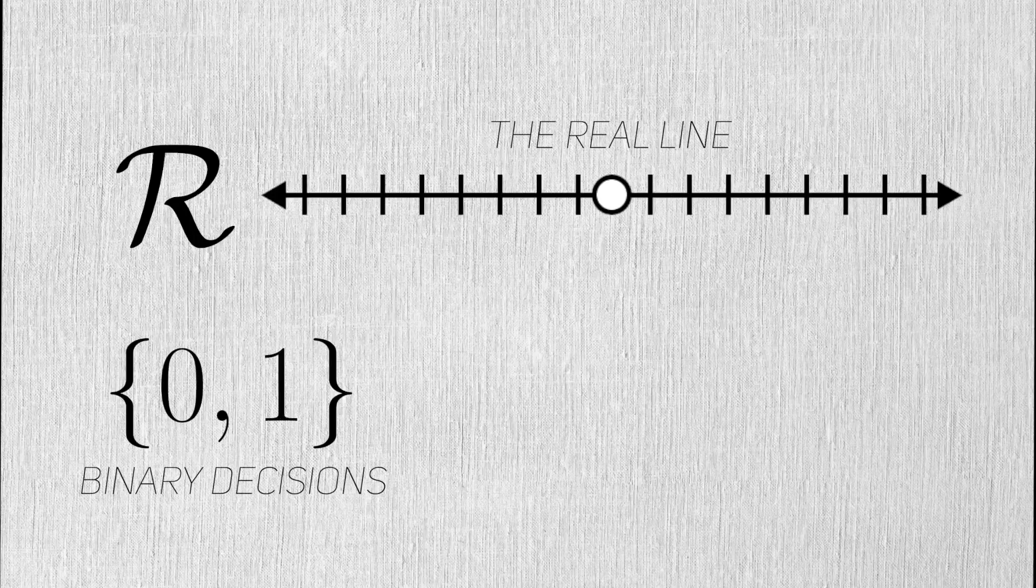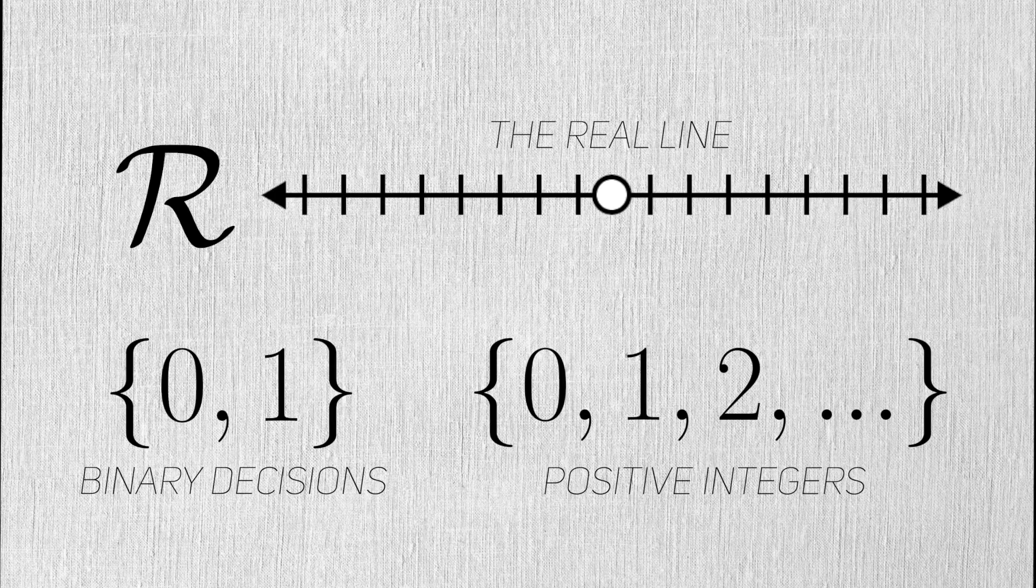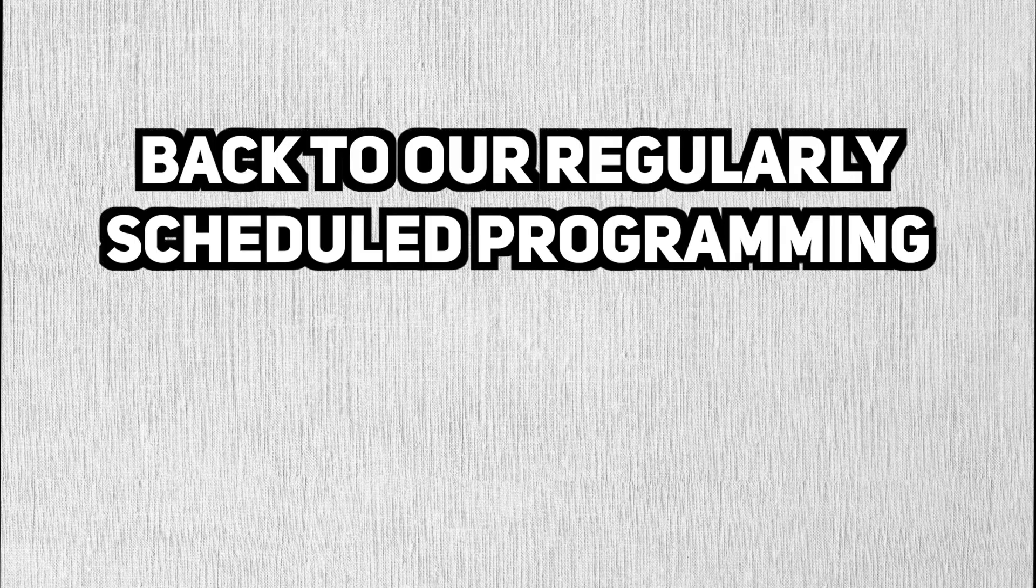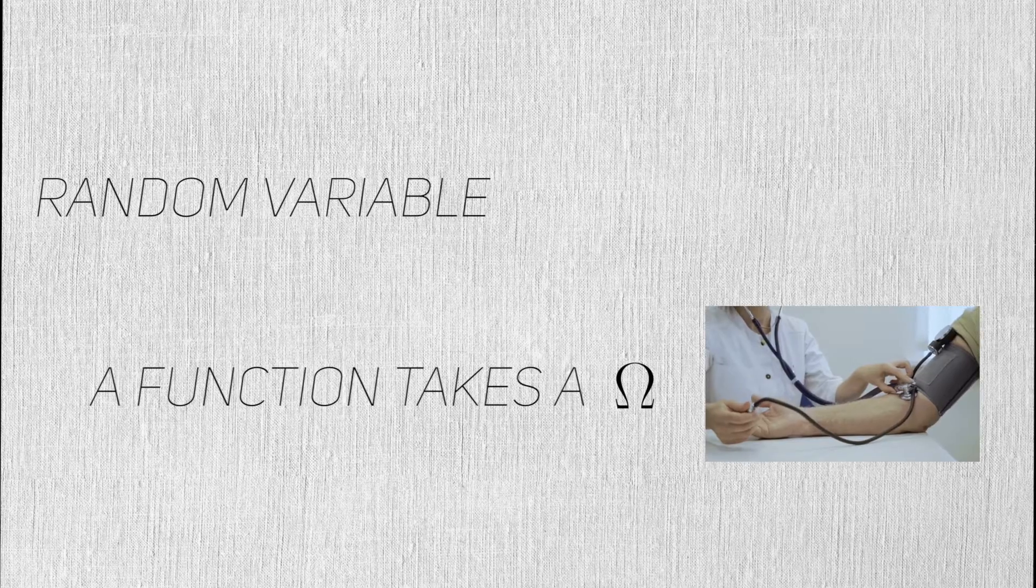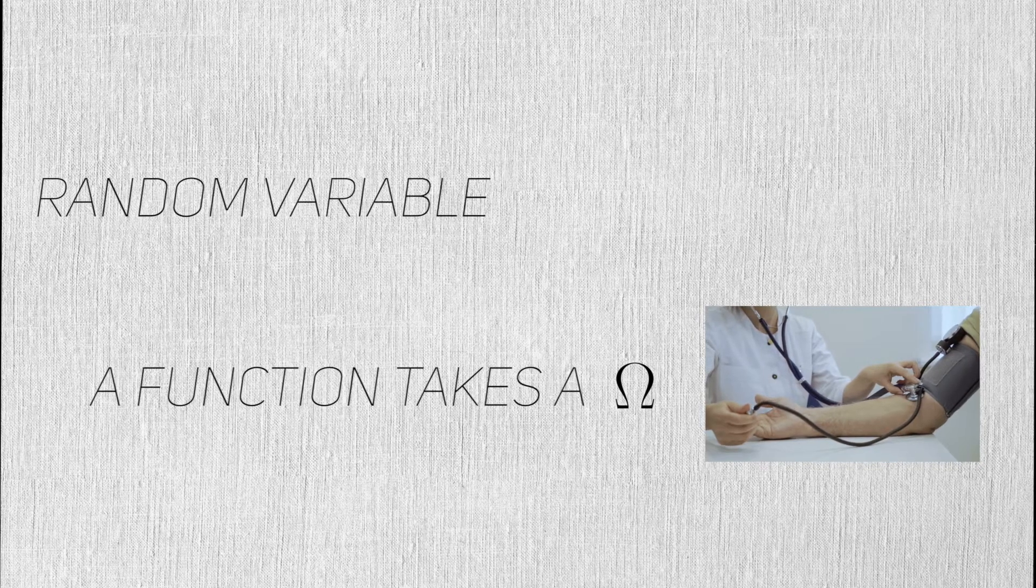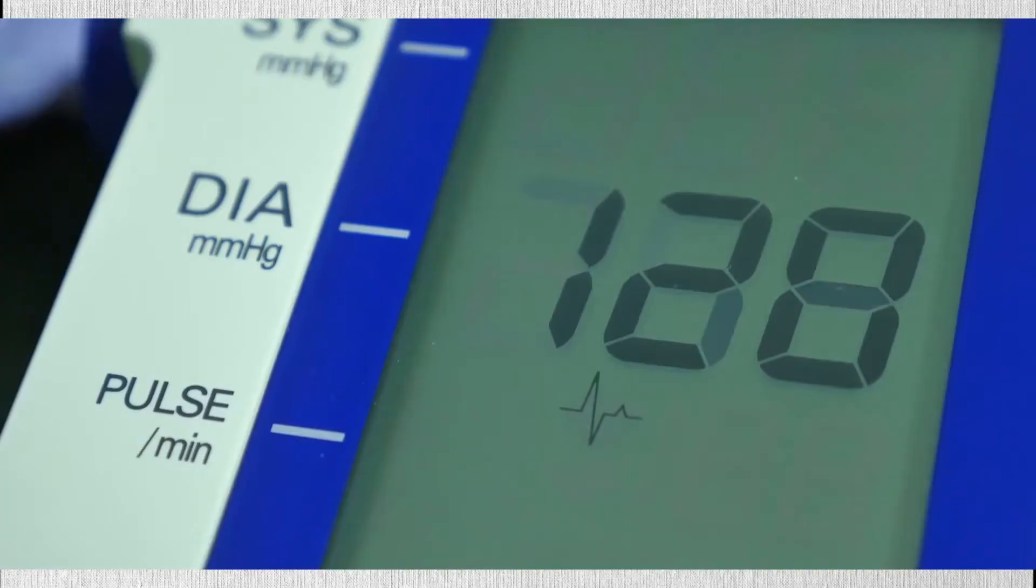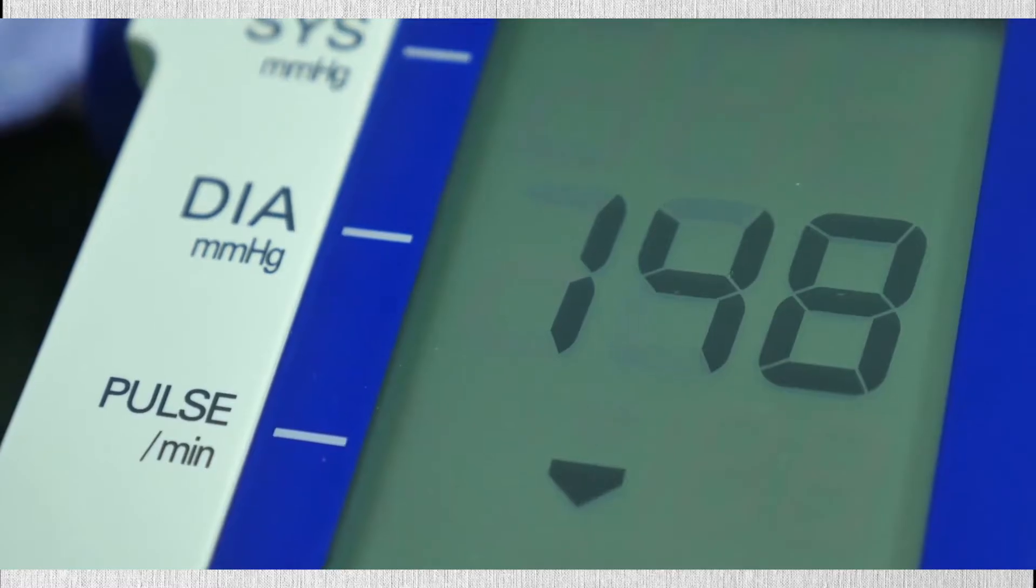The set of all possible outcomes in an experiment is called the sample space. This is where a random variable comes in. Strictly speaking, a random variable is just a function. This function takes in a sample space, like all the possible values that my blood pressure can take, and outputs a number. This number corresponds to what your doctor sees or observes.